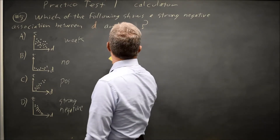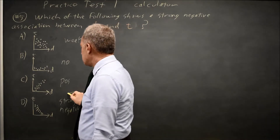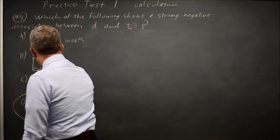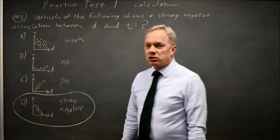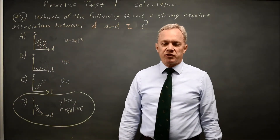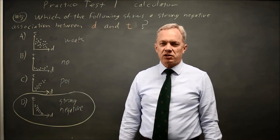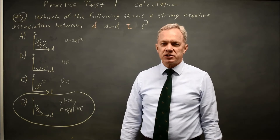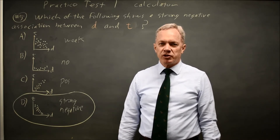So choice D is strong negative, which is what they're asking for, so D would be our answer. College Board often — in fact, always — asks questions on interpreting graphs, so this is well worth reviewing.